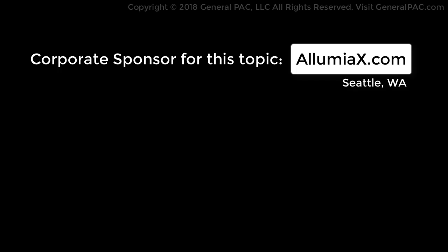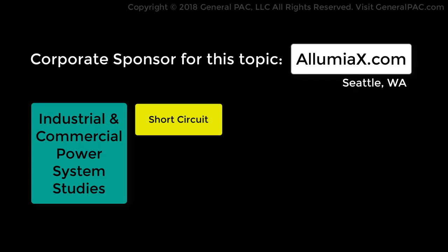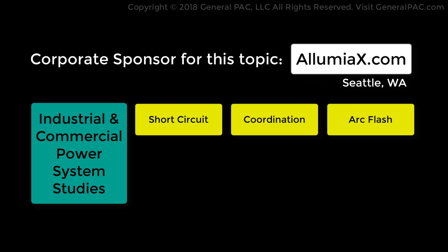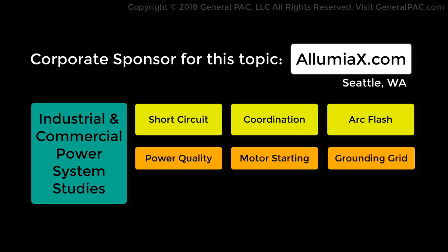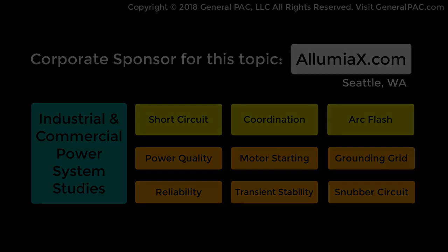From Seattle, Washington. Contact them for industrial and commercial power system studies like short circuit, coordination, and arc flash studies. Illumiax.com also performs advanced studies like power quality, motor starting, grounding grid, reliability, transient stability, and snubber circuit studies. Visit Illumiax.com for these power system studies.